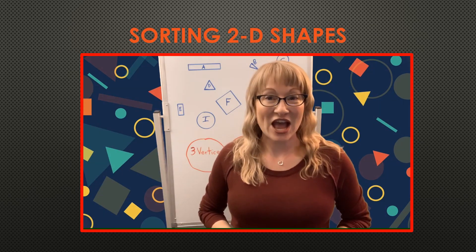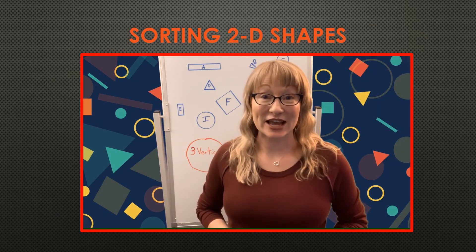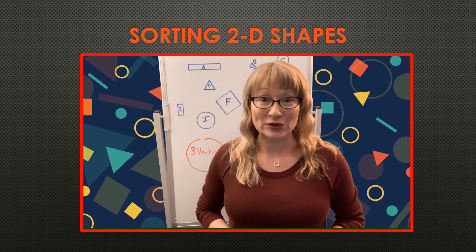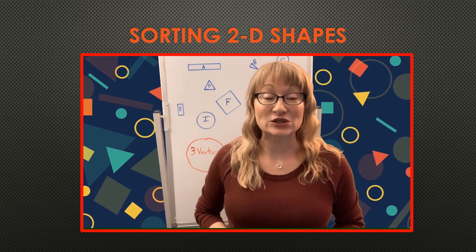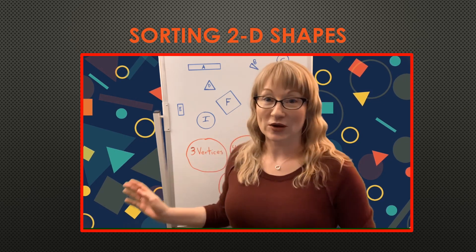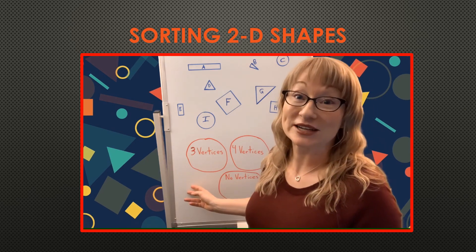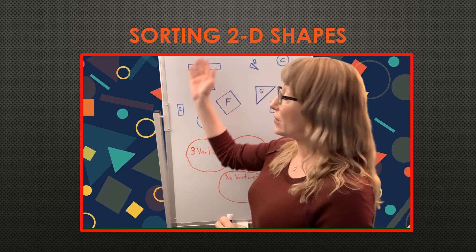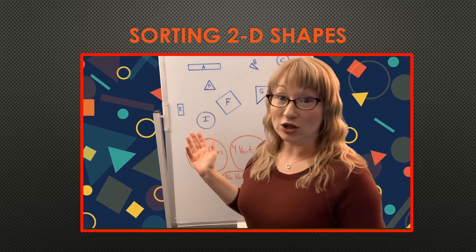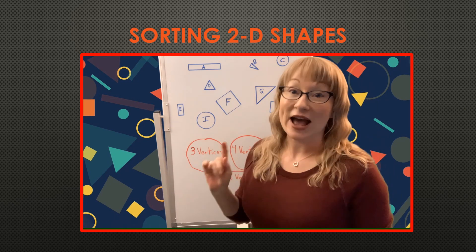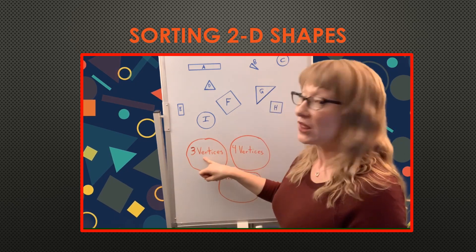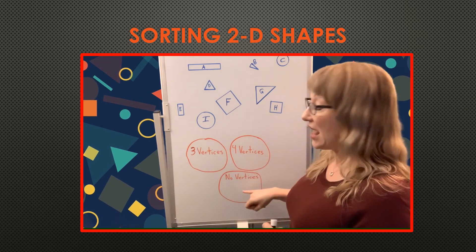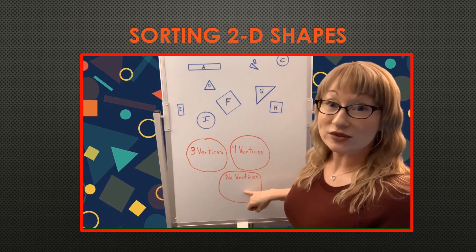Welcome back. So I have an activity coming up for you. I'm going to give you a bunch of different attributes, and you're going to have to put them into sorting circles. Although I haven't drawn perfect circles at the bottom here, these are my sorting circles for my example. Here is my group of objects — these are all shapes. I want to look at their attributes and pick out the ones that have three vertices and put the letters here, four vertices here, and no vertices here.